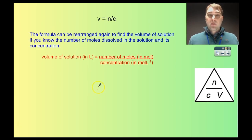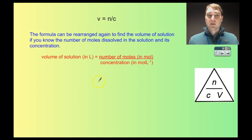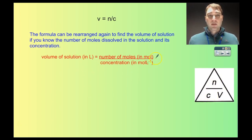Our final rearrangement of the formula is V equals N on C. We use this one occasionally — when we're trying to find the volume of a solution where we know how much solute we've dissolved and we know the concentration we're aiming for. Looking at our magical triangle: V equals N on C, so the volume of solution is the number of moles divided by the concentration.